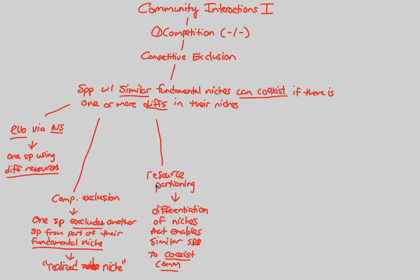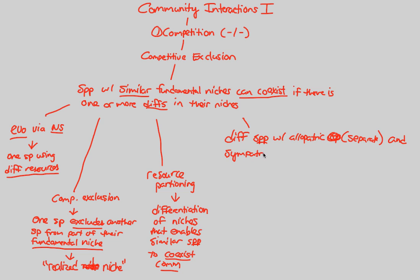That's why we see similar species living in the same area at the same time. In competitive exclusion, we also need to understand that different species can have allopatric — meaning separate — populations or sympatric populations, meaning overlapping. In ecology, the overlapping populations are what matters most for community interactions, as separated populations have no interactions of importance to us here.